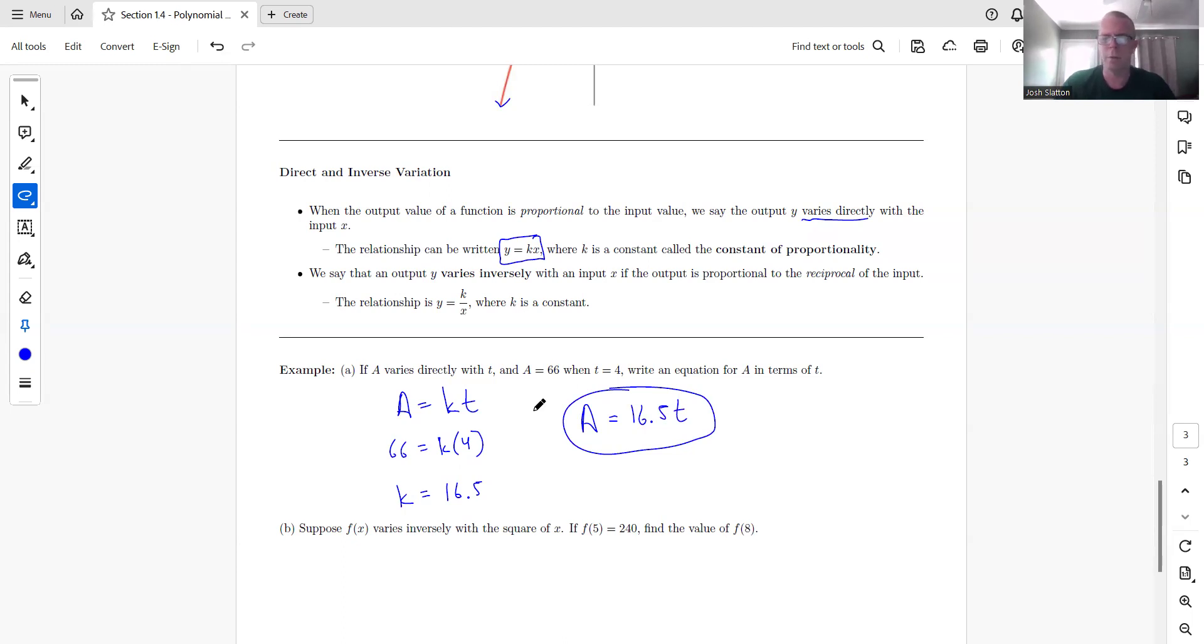So these are very simple. It's mostly just a matter of paying attention to the words that we're given. So varies directly means we're using this one.